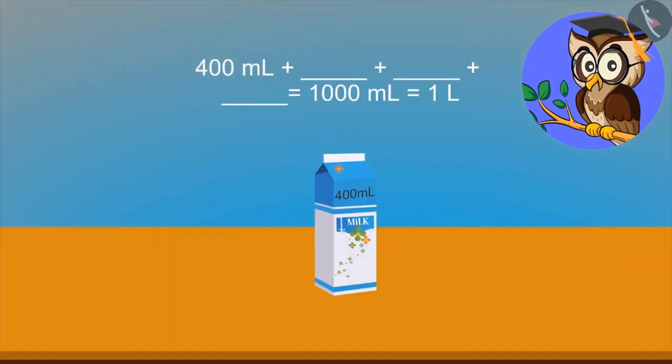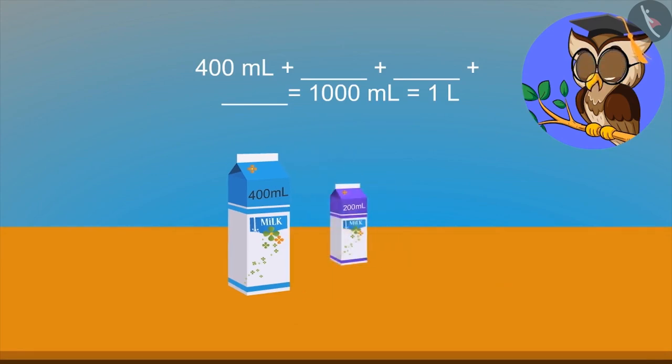See this. We have 400 ml of milk. We need 1000 ml or 1 litre milk. Now look. These are the packets of 200 ml, 300 ml and 400 ml. Which three identical packets will combine to make 1000 ml?